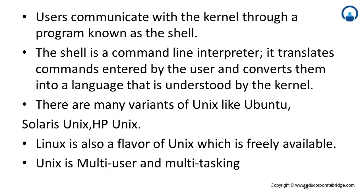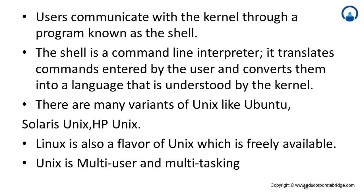Kernel and operating system are synonyms — don't confuse them. There are many variants of UNIX, like Ubuntu, Solaris, HP-UX. Ubuntu is free and can be downloaded to run side by side with Windows. Linux is also a flavor of UNIX which is freely available. UNIX supports multiple users and multitasking — many users can log in at the same time and multiple tasks can be performed simultaneously.